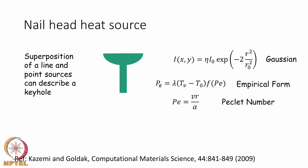One can fit profiles for the power distribution in the keyhole and use a combination of the Gaussian and the power distribution to achieve a heat source that looks like a nail head. Such a nail head heat source seems to reproduce the keyhole shape quite accurately, and the number of fitting parameters is not large except for the empirical form.